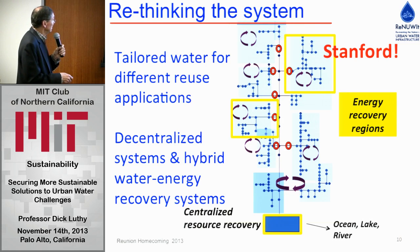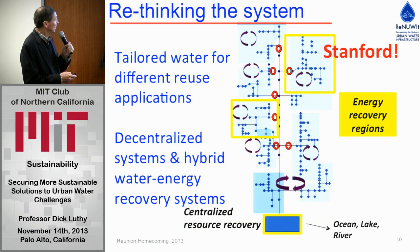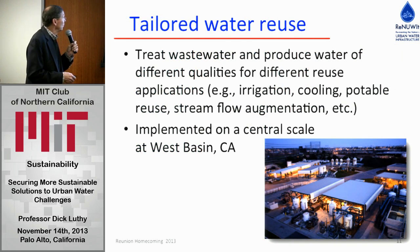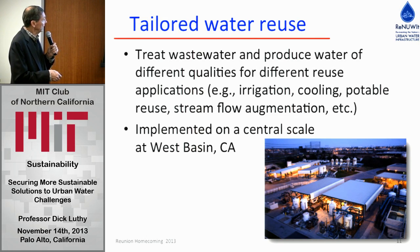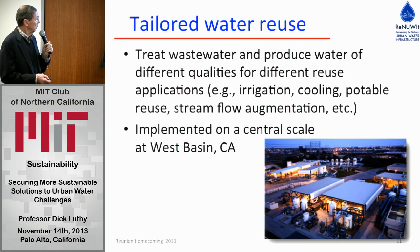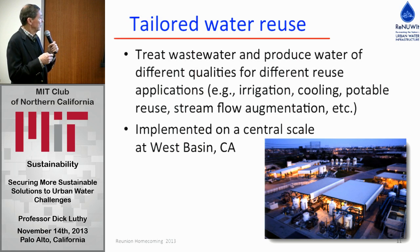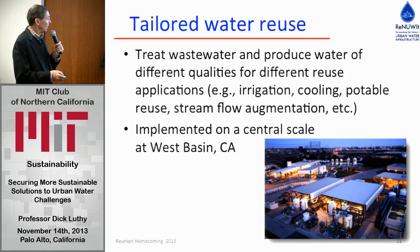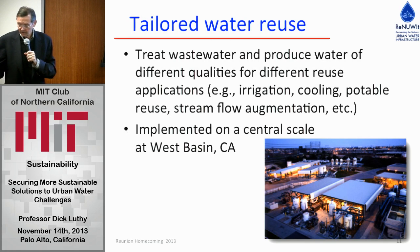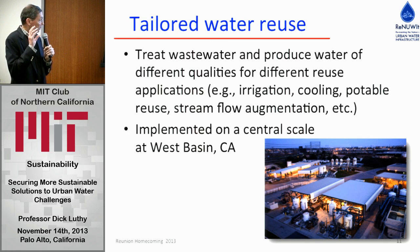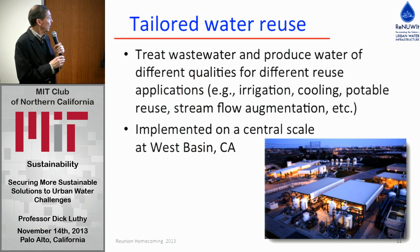We might also produce waters of different qualities for different purposes. West Basin, a district just south of LAX, produces various kinds of water: for boiler makeup, cooling tower makeup, irrigation, and saltwater intrusion barrier. This is an example of rethinking the system — we don't necessarily have to produce one kind of water; we could produce different quality waters depending on the purpose.